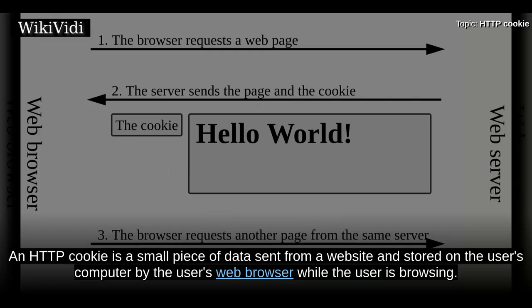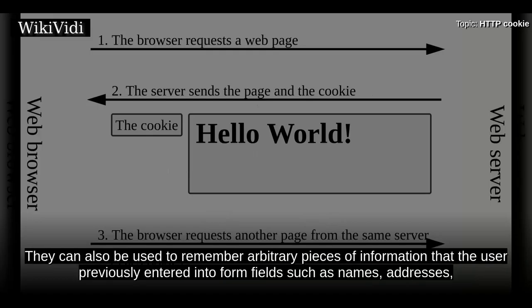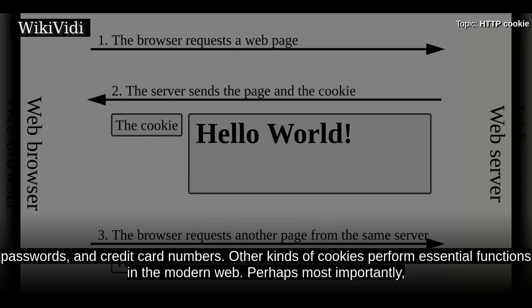An HTTP cookie is a small piece of data sent from a website and stored on the user's computer by the user's web browser while the user is browsing. Cookies were designed to be a reliable mechanism for websites to remember stateful information or to record the user's browsing activity. They can also be used to remember arbitrary pieces of information that the user previously entered into form fields, such as names, addresses, passwords, and credit card numbers.